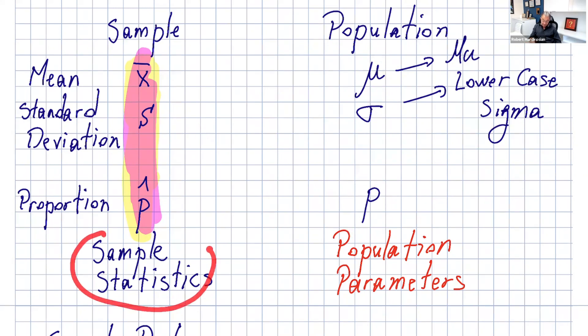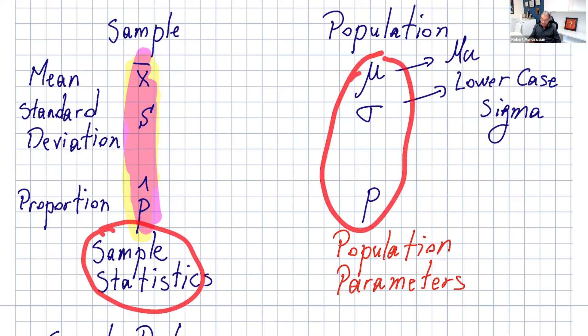So these are sample statistics. We can calculate those. These are population parameters. They're not very obvious to calculate sometimes because we're dealing with millions of people. So we can estimate those if the population size is very big.